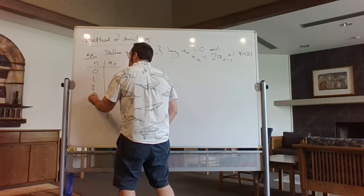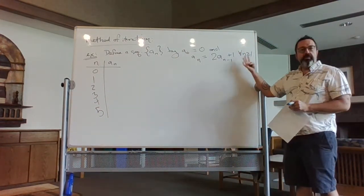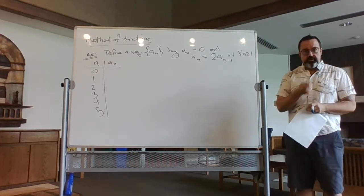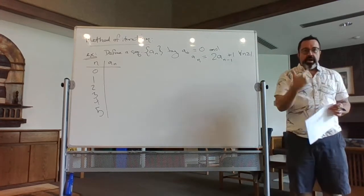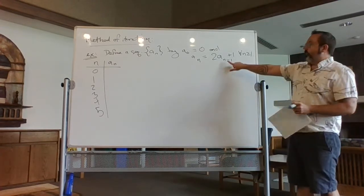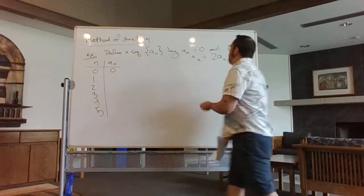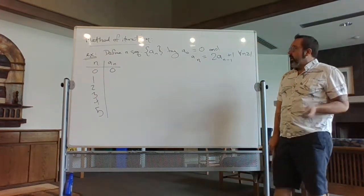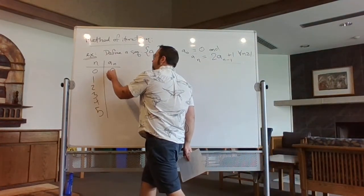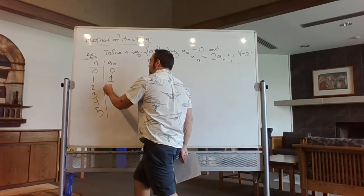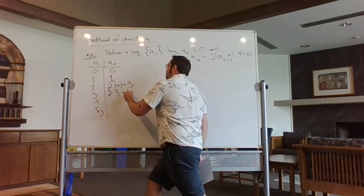At the start, if we're not familiar with this, we have no guess as to what the closed, explicit formula for the terms of the sequence is. The method of iteration can help us determine what such a pattern might be. Starting with a_0 equals zero, we apply the formula: two times zero plus one gives one. Two times one plus one gives three. Two times three plus one gives seven.